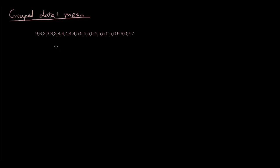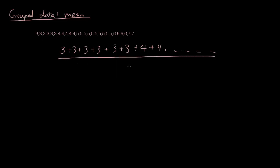When we want to find the mean of this group of data, rather than doing it the traditional way — where we add all the numbers together, so we'd have to go 3 plus 3 plus 3 plus 3 plus 3 plus 3 plus 4 plus 4, and so on — add them all together and then divide by however many numbers there are. The mean is the sum of x divided by how many numbers there are, which means adding all the numbers together and dividing by how many there are to arrive at our answer. That's going to take a little bit longer than the other way.